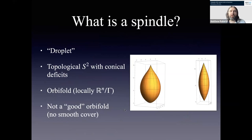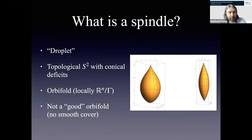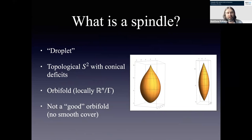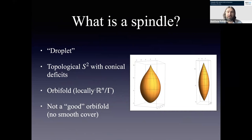A reasonable starting point is just saying: what is a spindle? A spindle is a very nice mathematical object that you can think of as something topologically a two-sphere, except it's not necessarily a round two-sphere — you might have conical deficits at the poles. You can think of this as an orbifold in the sense that locally it's covered by patches of R^n quotiented by some discrete subgroup.